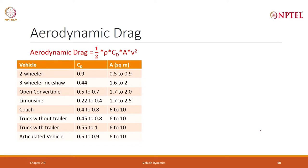As we have studied, aerodynamic drag is one-half times rho (air density) times CD (drag coefficient) times the projected area A times velocity squared. What is the typical value of CD and area for different vehicles? The projected area of a two-wheeler is very small, a three-wheeler larger, a car larger still. A coach, truck, or truck with trailer will have bigger and bigger numbers.